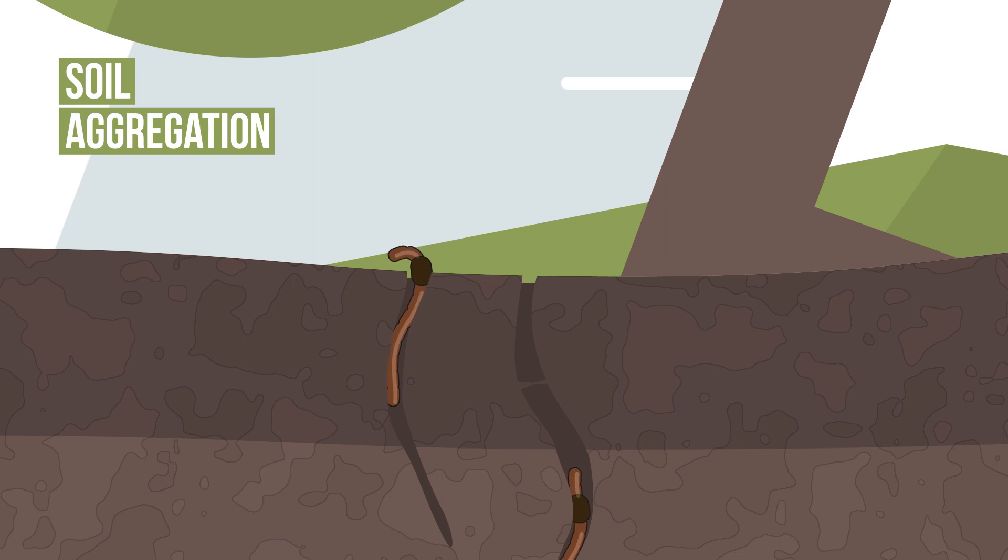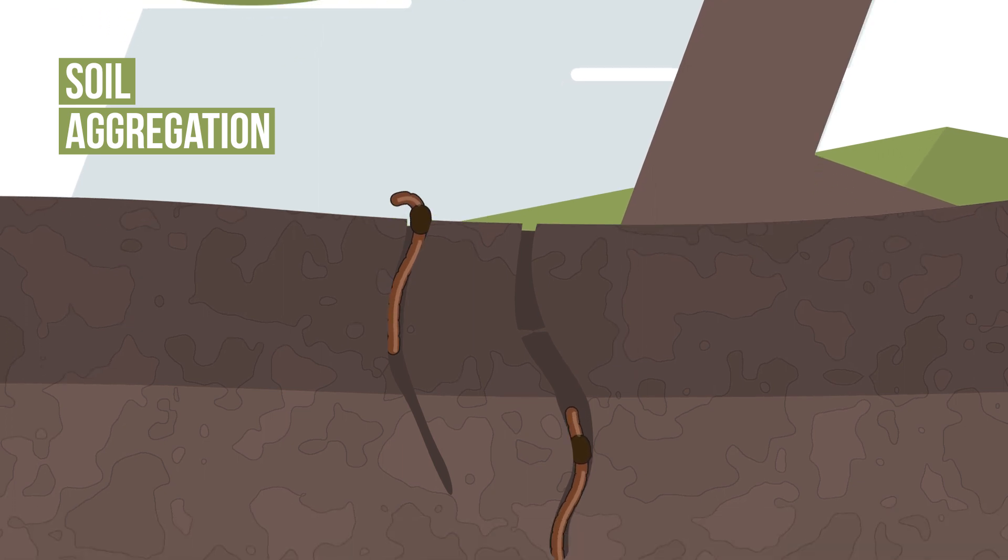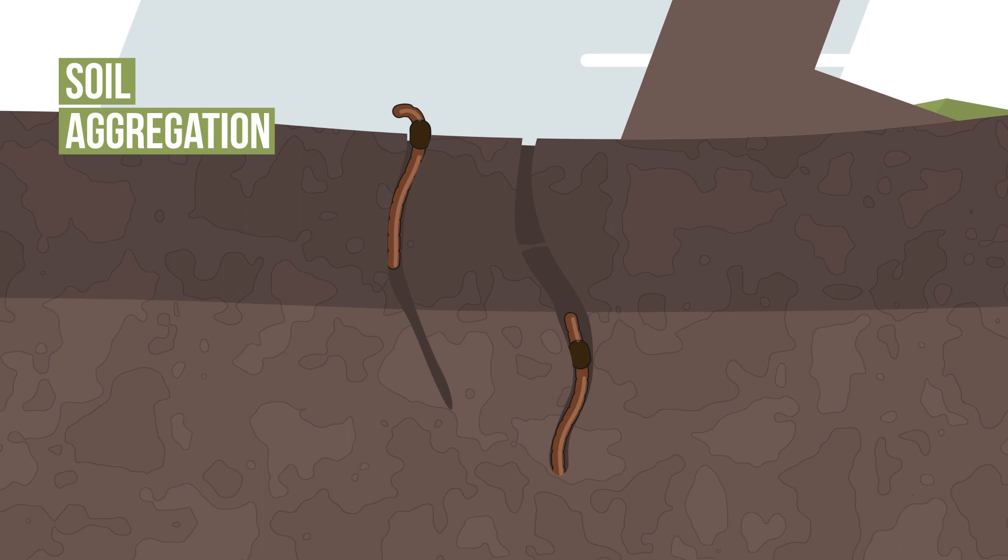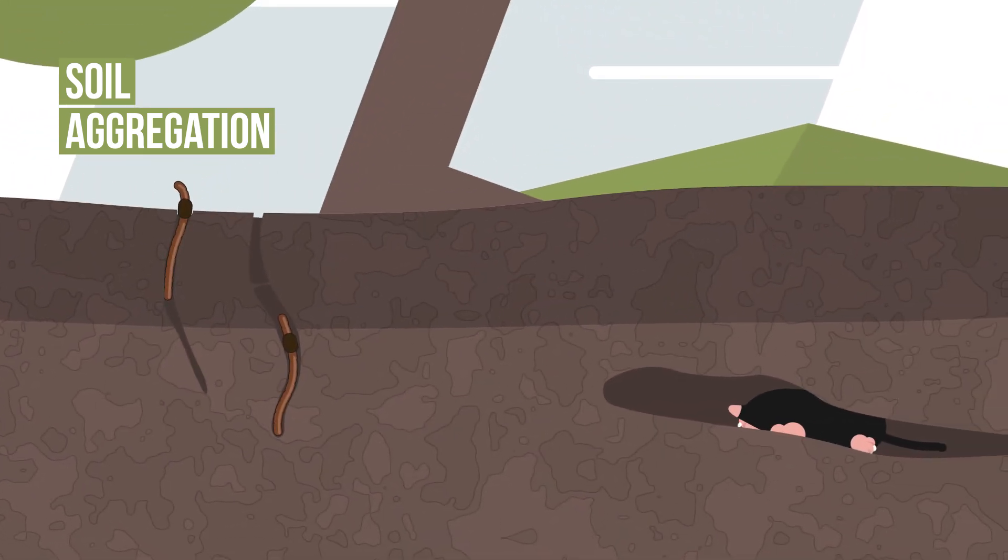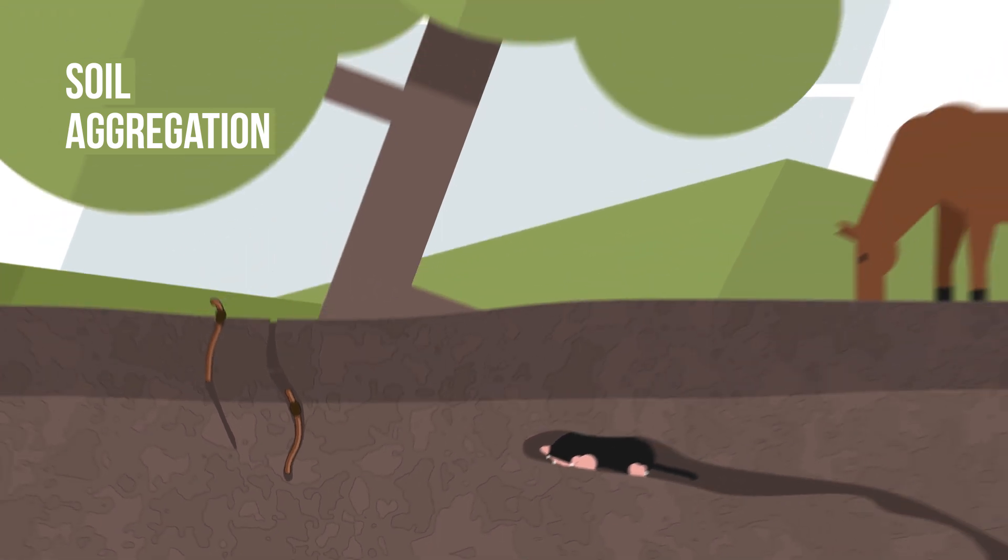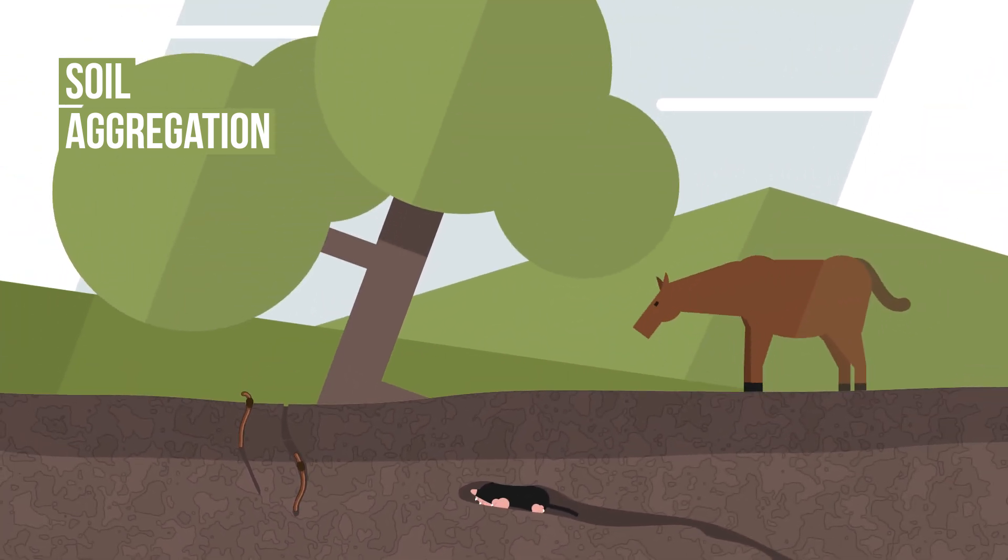Earthworms help the soil aggregation too, by increasing microbial activity in the soil and organic matter they ingest. Larger animals help water penetrate soil by creating pathways for water to flow or by increasing soil's bulk density.